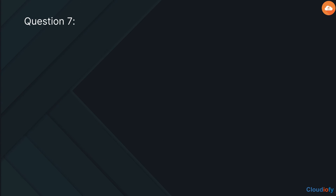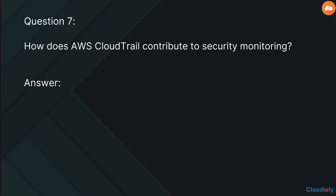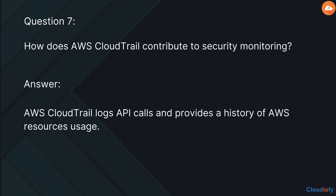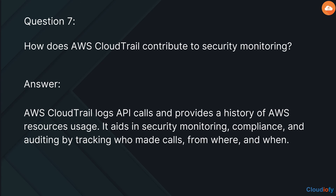The next question is: how does AWS CloudTrail contribute to security monitoring? AWS CloudTrail logs API calls and provides a history of AWS resource usage. It aids in security monitoring, compliance, and auditing by tracking who made calls, from where, and when.